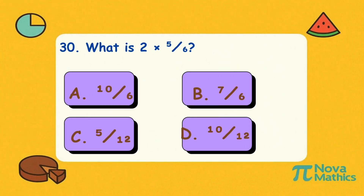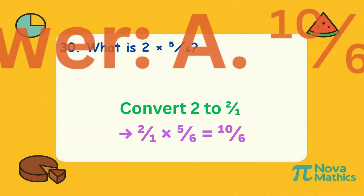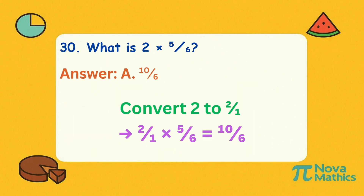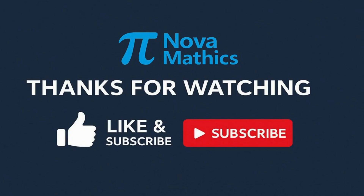Thirty. What is two times five-sixths? Change two to two-over-one. Multiply top and bottom. That's ten-sixths.